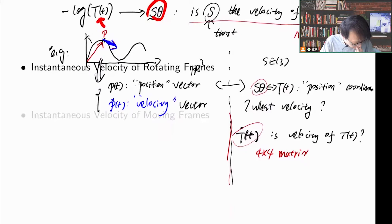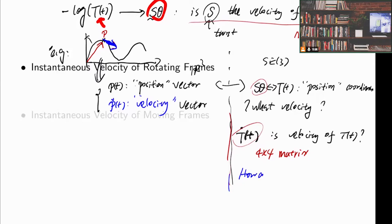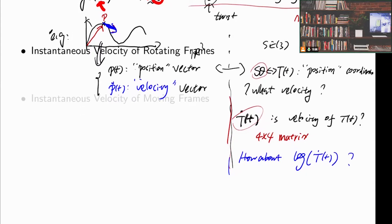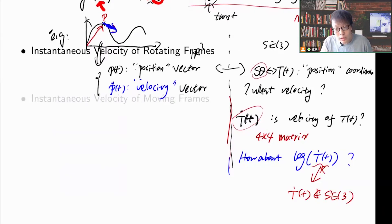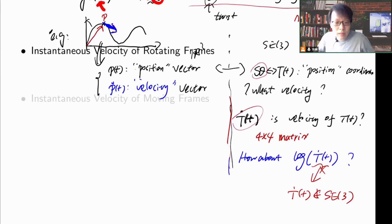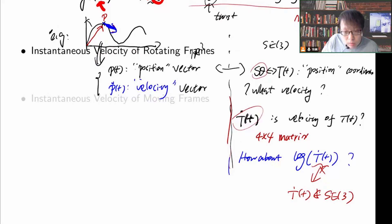We have to go back to physics. Maybe some students may ask: how about taking log of T_dot? That doesn't make sense — T_dot does not even belong to SE(3). You don't have an exponential coordinate for it. This is a wrong approach. Let's go back to physics, and we will see how we can derive the actual velocity of the frame.